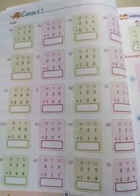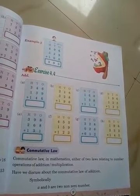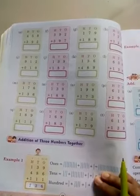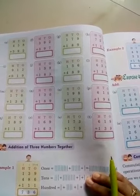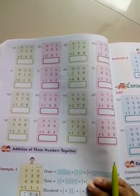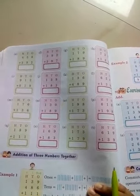This is the way how we are going to do exercise 4.2 and 4.3. After this, you know what we are going to learn? We are going to learn the 3 column addition. Exercise 4.4, it's a little bit difficult.